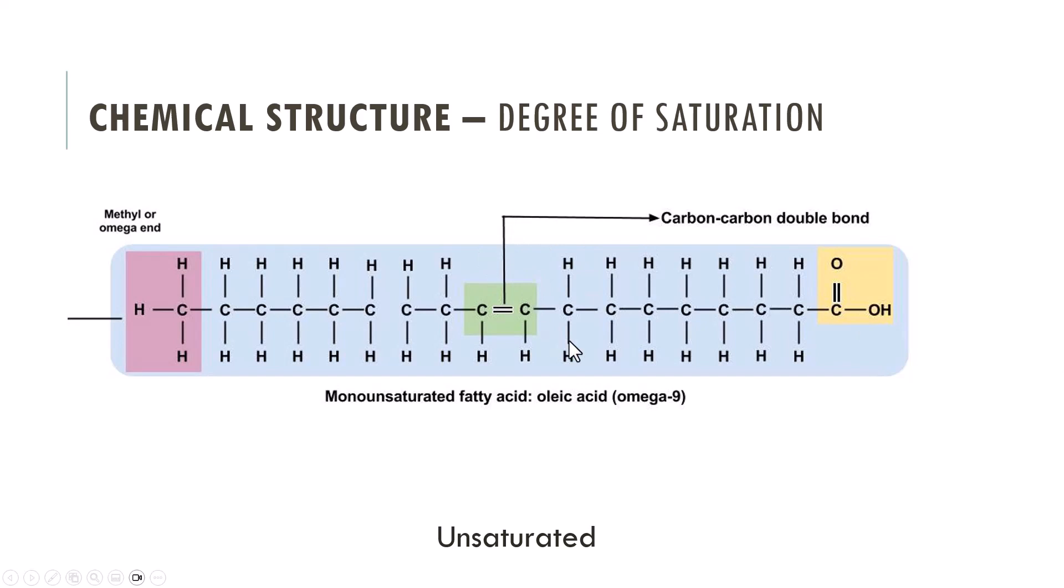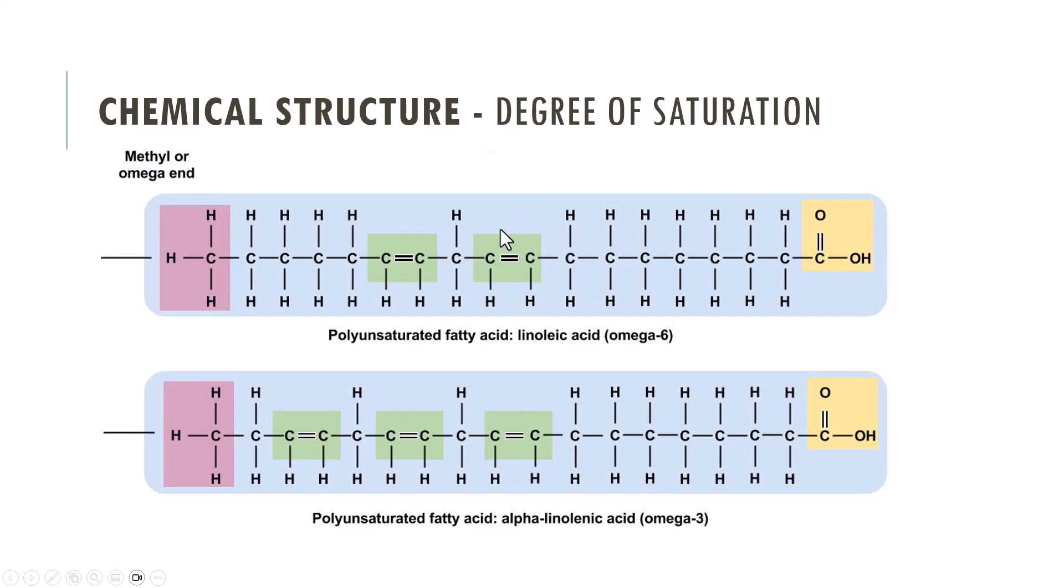An unsaturated fatty acid can have one or more points of unsaturation. If there's only one point of unsaturation, the fatty acid is called a monounsaturated fat, which you see represented on the slide in front of you. Two or more points of unsaturation are called polyunsaturated fatty acids. The graphic on the slide represents two different types of polyunsaturated fatty acids.